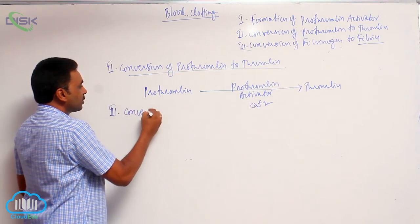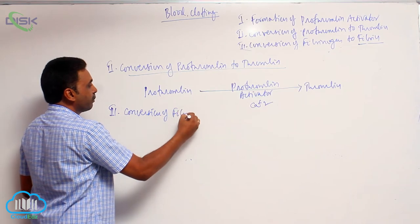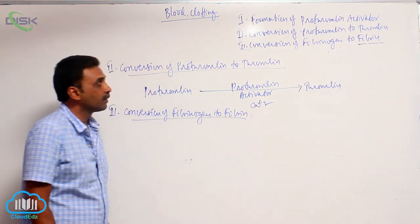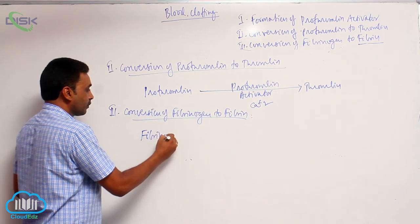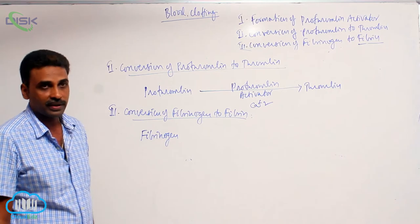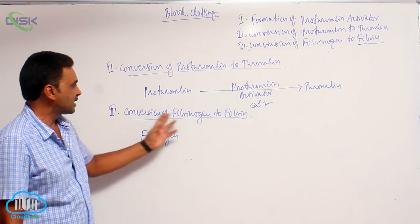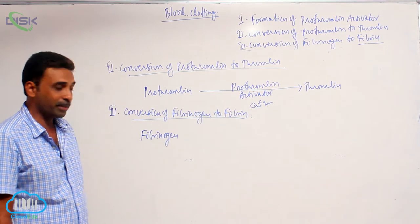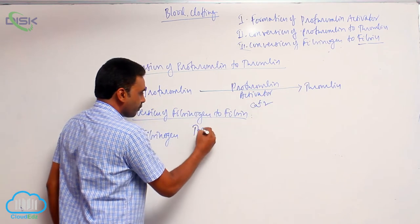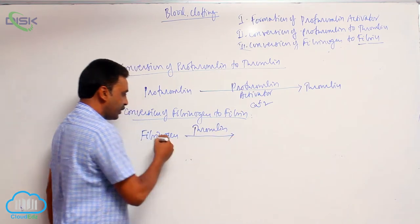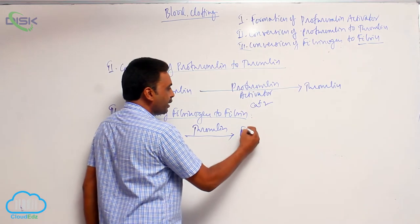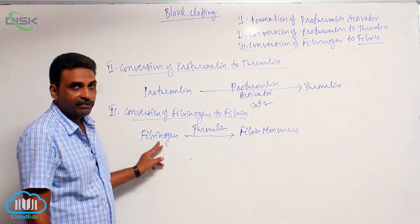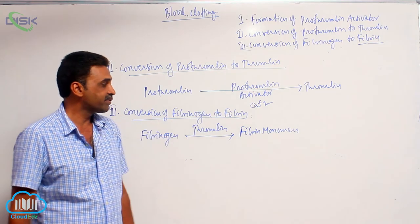The final step is conversion of fibrinogen to fibrin. Fibrinogen is inactive — this is the last step, which includes the formation of a fibrin mesh. Thrombin comes and activates fibrinogen; once it is activated, fibrin monomers are formed — inactive fibrinogen is converted into active fibrin, also called fibrin monomers.